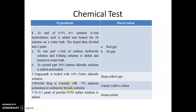Another test: powdered drug is warmed with 5% aqueous potassium or sodium hydroxide solution — an alkaline solution — and it produces a canary yellow color. Additionally, to 0.1 gram of powdered drug, if N/50 iodine solution is added, a green color is observed. These are the chemical tests for the identification of Tragacanth.